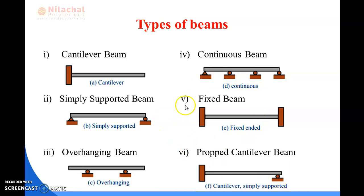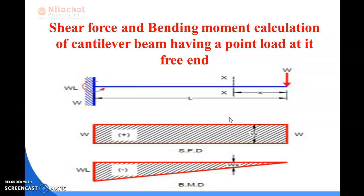So these six are the types of beam. Next we will look at the shear force and bending moment calculation of a cantilever beam having a point load at its free end. You can see in the diagram: a cantilever beam is fixed at one end and free at the other end, with a point load at the free end. We will discuss this in the next class. Today this much — thank you.